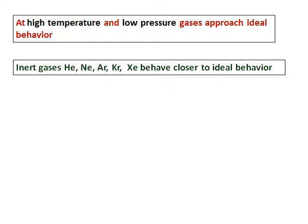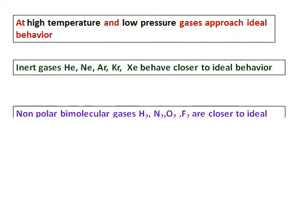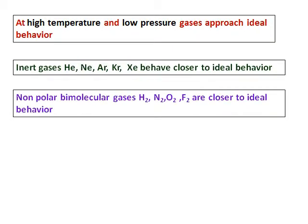At high temperature and low pressure, gases approach ideal behavior. Noble gases like helium, neon, argon, krypton and xenon behave closer to ideal behavior. And nonpolar diatomic gases like hydrogen, nitrogen, oxygen and fluorine, they also behave very close to ideal behavior.